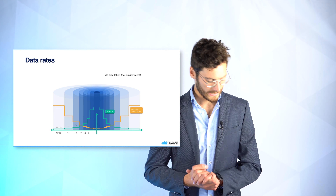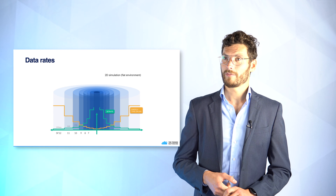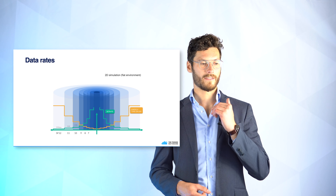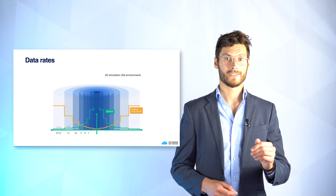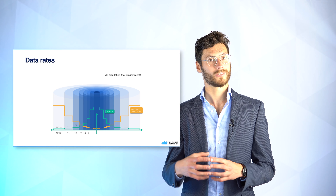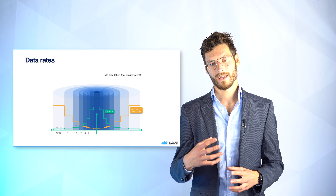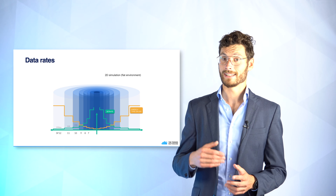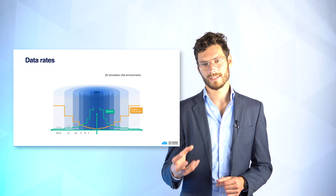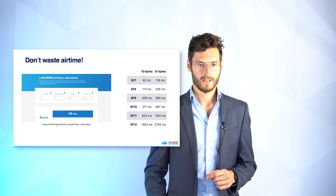Once your device has an active session with the network server, it can start sending data. There are different data rates available: a high data rate uses a low spreading factor and sends data quickly, while a low data rate uses a high spreading factor. The advantage of a lower data rate is greater range, because the faster the data is sent, the harder it is for the gateway to decode the signal — so reducing transmission speed increases range.